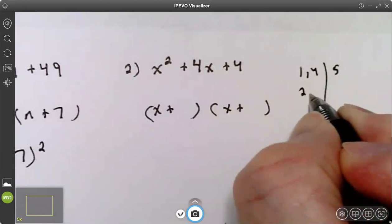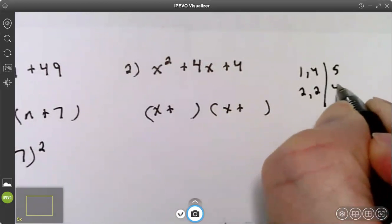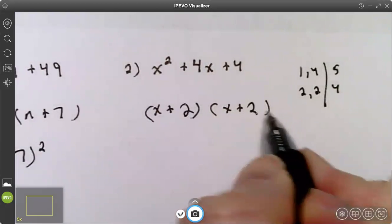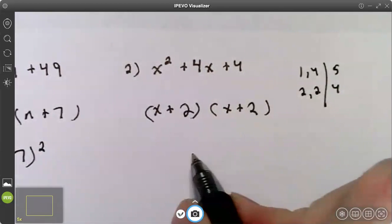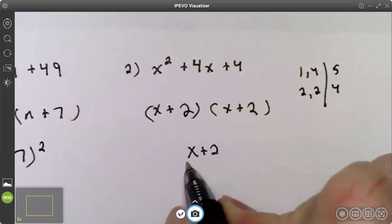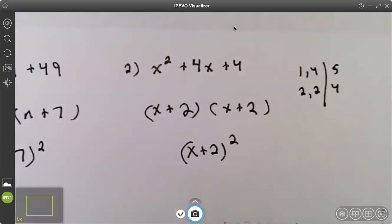One times four is four. One plus four is five. Two times two is four. Two plus two is four. So my numbers are two and two. They match. So that's not simplest form. Simplest form is x plus two squared.